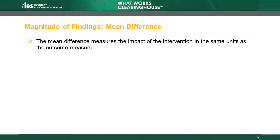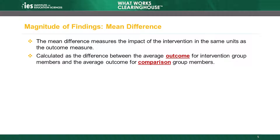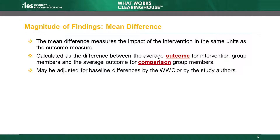First, the mean difference measures the magnitude of the effect of the intervention using the units of the outcome measure. This is calculated as the difference between the average outcome for intervention group members and the average outcome for comparison group members. The mean difference may be adjusted for baseline differences, either by the WWC or by the study authors. We will discuss these adjustments later in this module.